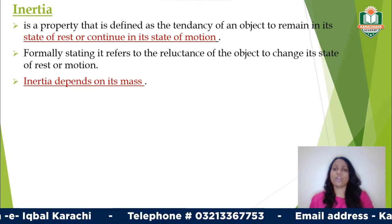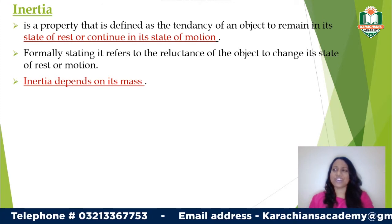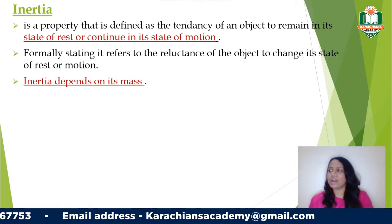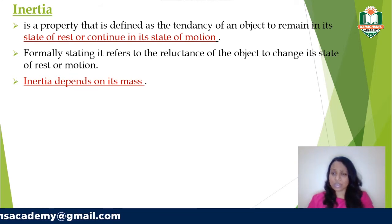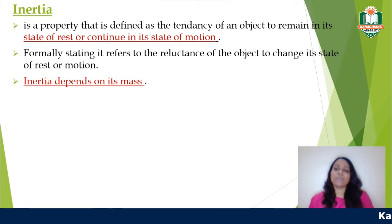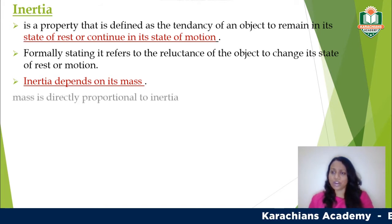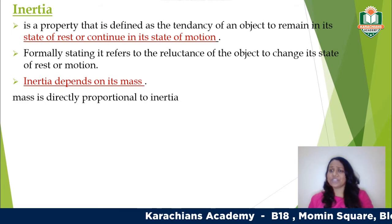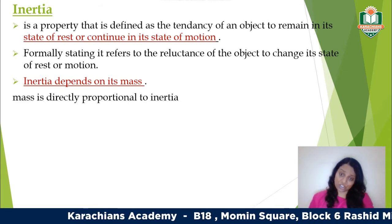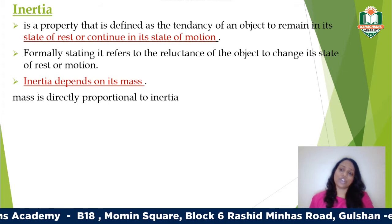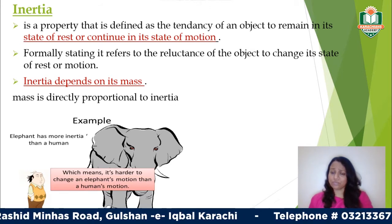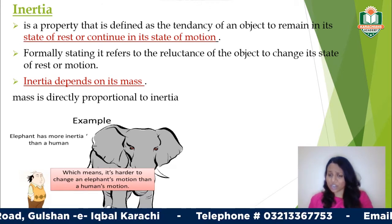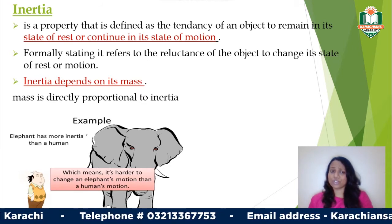Inertia depends on mass: the larger the mass of an object, the more will be its inertia and the more resistance to movement. For example, if you have a cupboard and a small side table, it will be easier to move the side table which has less mass. The cupboard, having greater mass, will have more inertia. Mass is directly proportional to inertia.